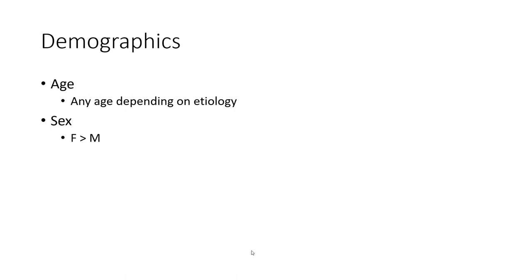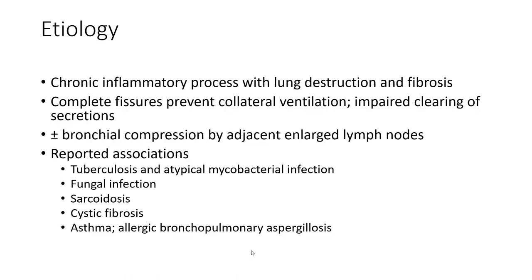Demographics: can happen at any age depending on etiology. Predominantly female. Etiology involves a bronchial inflammatory process, airway and lung destruction, and fibrosis. Complete fissure prevents collateral ventilation. Impaired clearing of secretions, plus minor bronchial compression by adjacent enlarged lymph nodes.